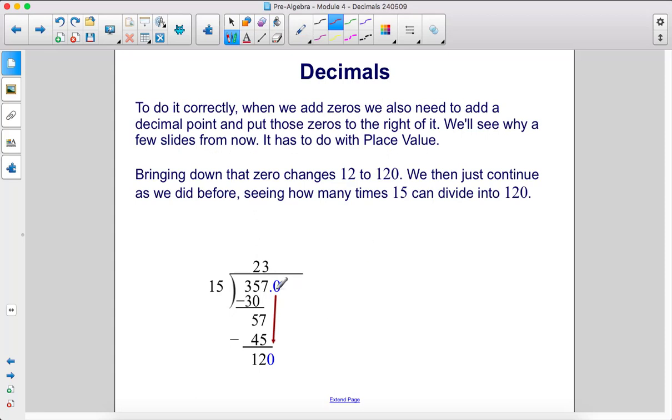To do it correctly, when we add zeros, we also need to add a decimal point and put those zeros to the right of it. We'll see why a few slides from now.